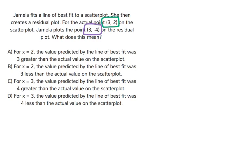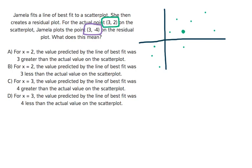So let's say we had a scatter plot. Let's say I have some points here. This is going to be my point (3, 2) right there. So that's my point (3, 2) — that's my actual point. Let's say I had a line of best fit that looked like this. That would probably mean I have some points up here too.